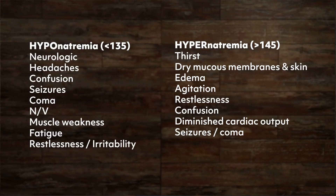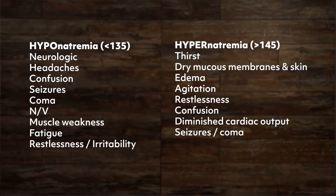Hypernatremia, or sodium level higher than 145, results from too much sodium and not enough water. It can occur from various factors including dehydration, fever, diabetes insipidus, Cushing's syndrome, long exposure to environmental heat, or extensive exercise. Signs and symptoms include thirst, dry mucous membranes and skin, edema, agitation, restlessness, confusion, diminished cardiac output, and in severe cases, seizures and coma. Treatment includes correction of underlying causes by administering diuretics, measuring intake and output, dialysis, and decreased sodium intake.